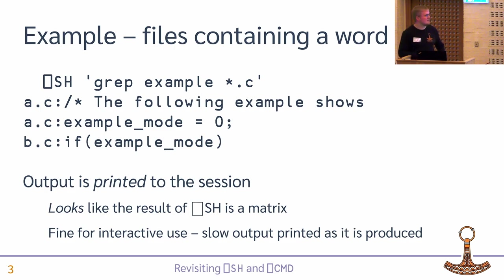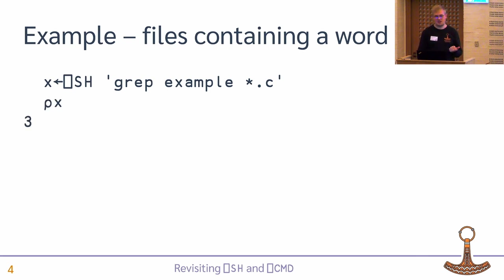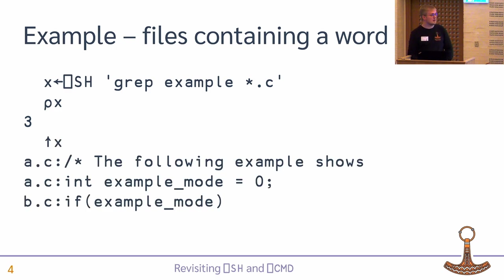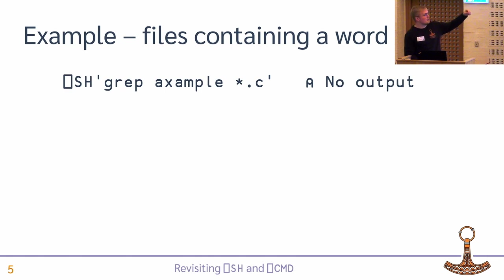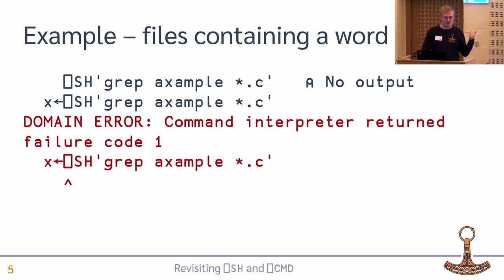It's also a little bit deceiving, because when I try to assign the result of Quad-SH — the same command — and look at the shape, it's a vector. So there are different modes of operation depending on whether the result is assigned or used interactively. It's a nested array where each element is one of the lines from the output, so I can mix it and get the same thing. If I just try to look for another word that probably isn't in my example data, I get no output in the first case, but in the second case I get a domain error.